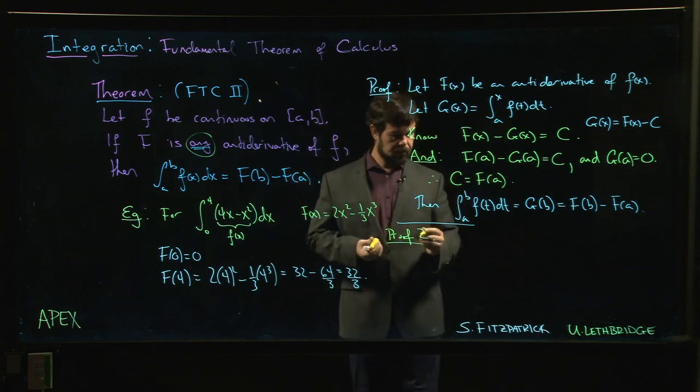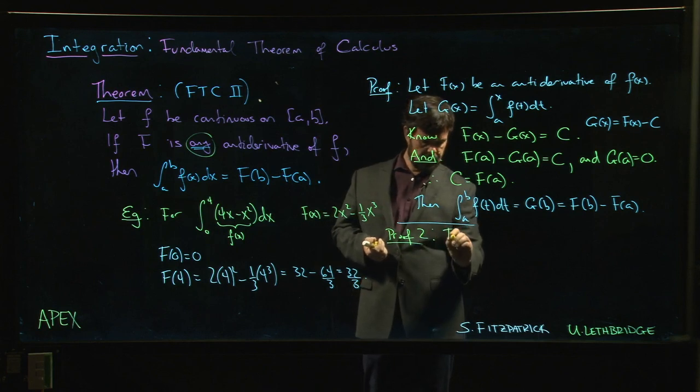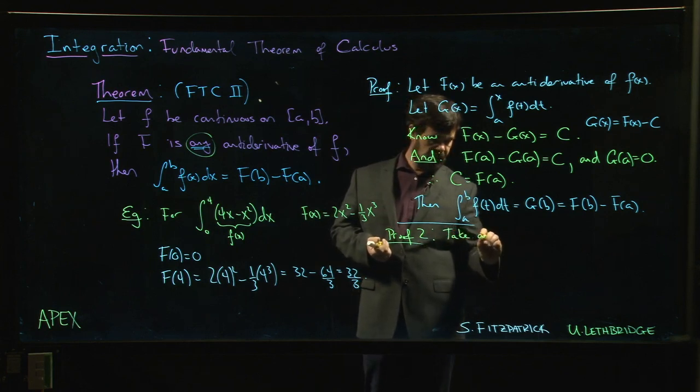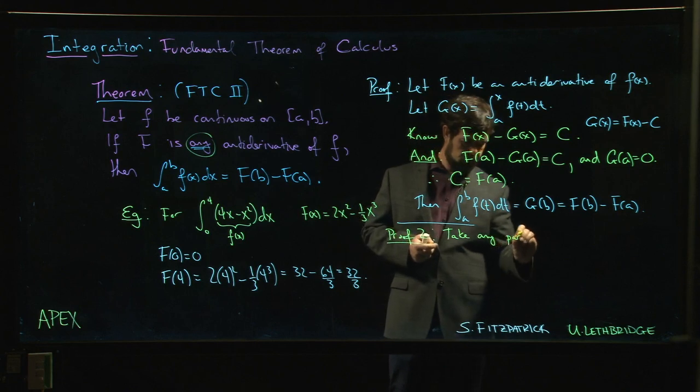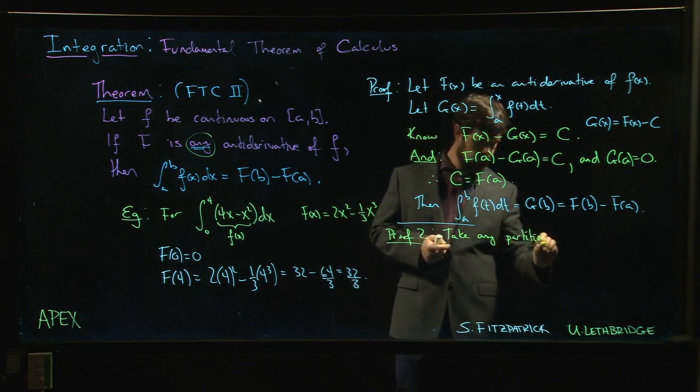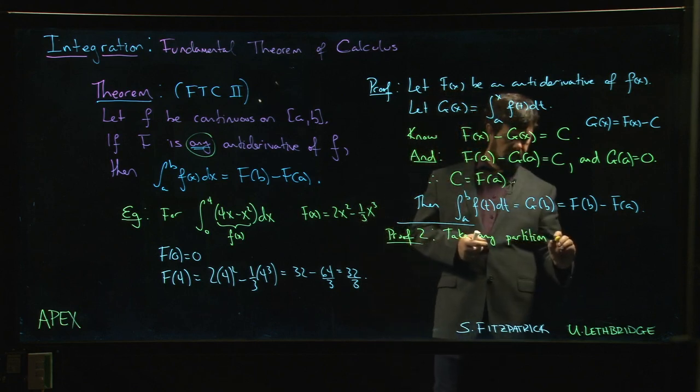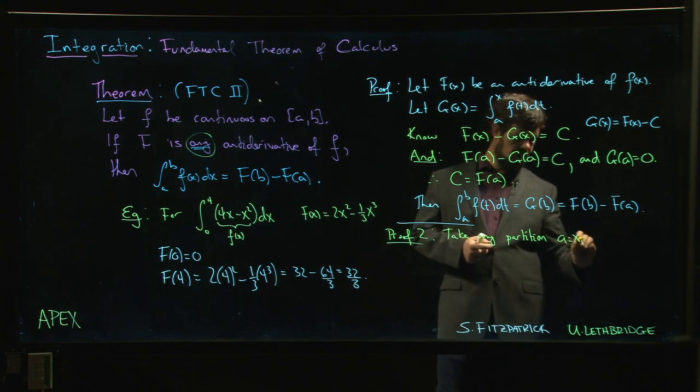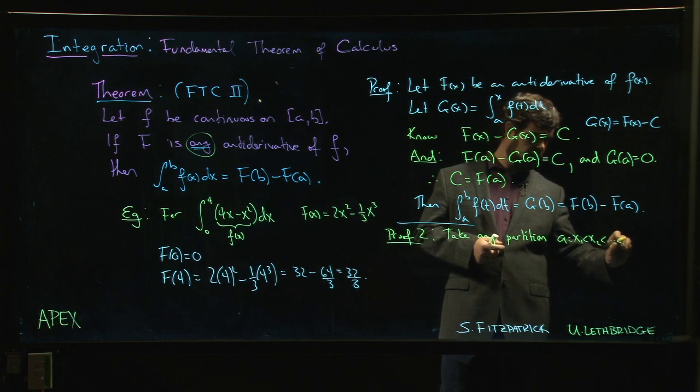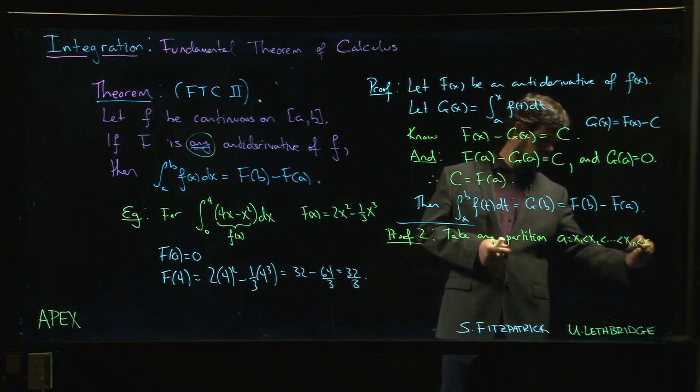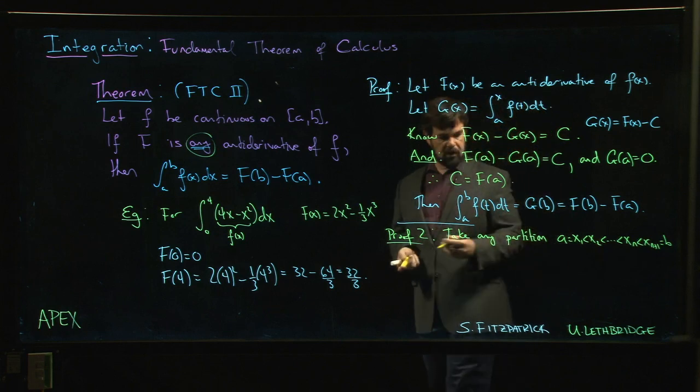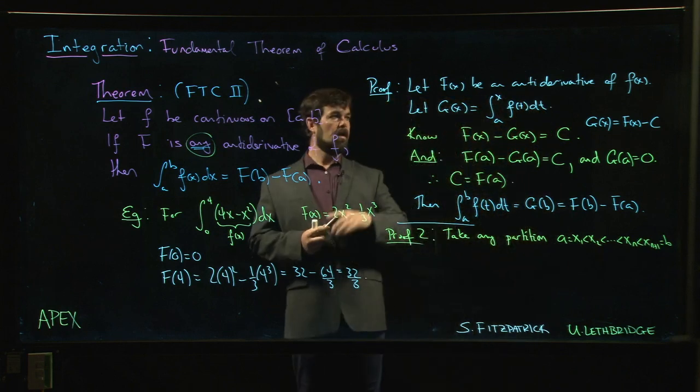Let's take any partition. So we take a to be our x1 less than x2 down to xn, and then xn+1 which is b. So we take a partition of [a,b].